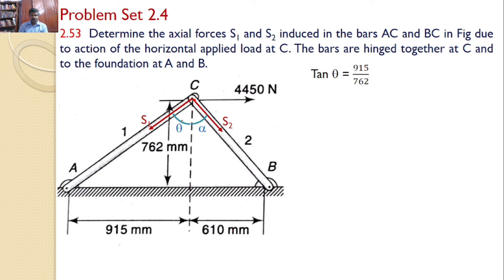Now, you can find the value of tan theta. Since all these dimensions are given, you can find tan theta is equal to 915 by 762. From that, you can find theta is equal to 50.61. Similarly, you can also find the value of alpha, that is tan alpha is equal to 610 by 762, which gives the value of 38.68.